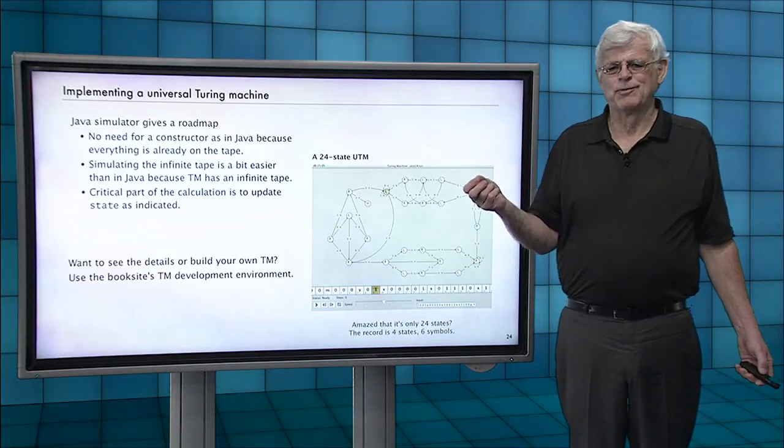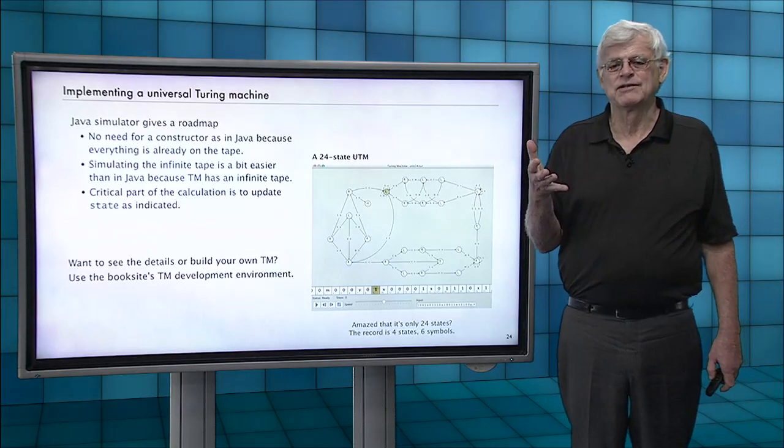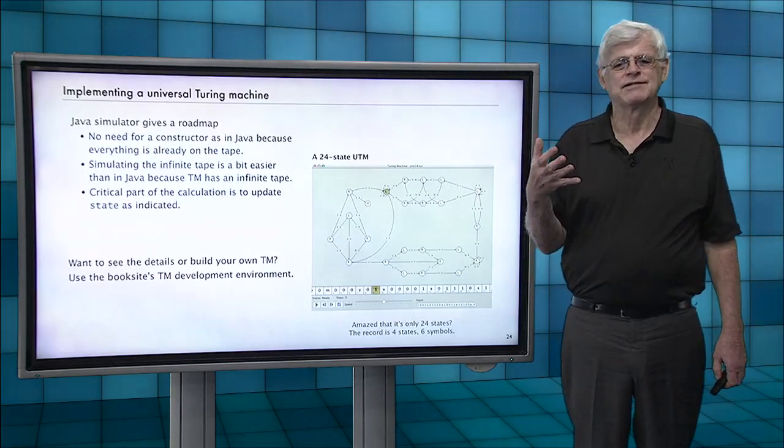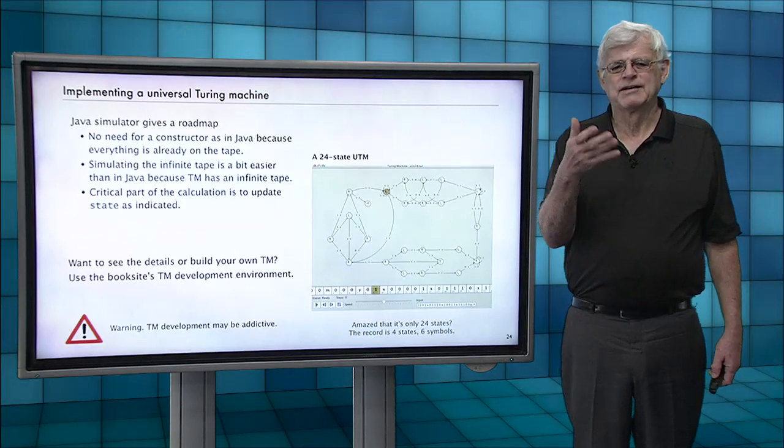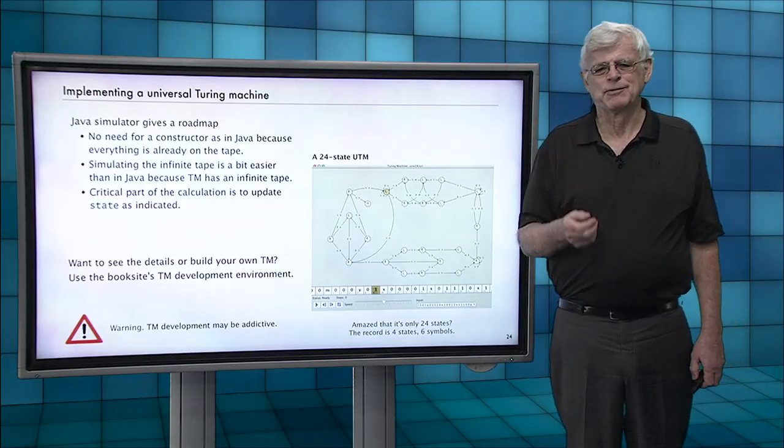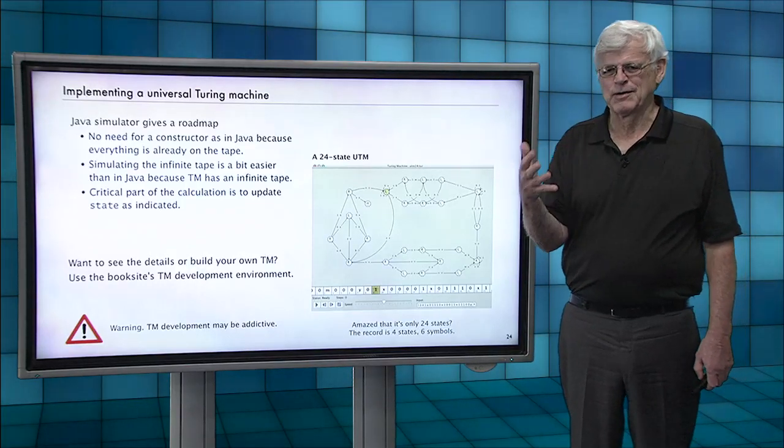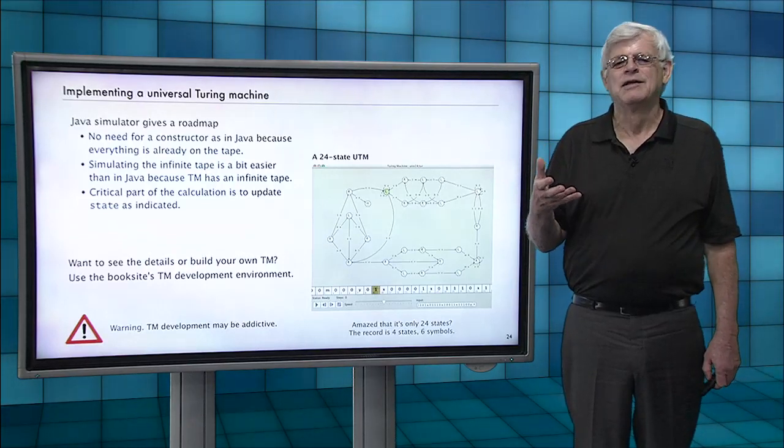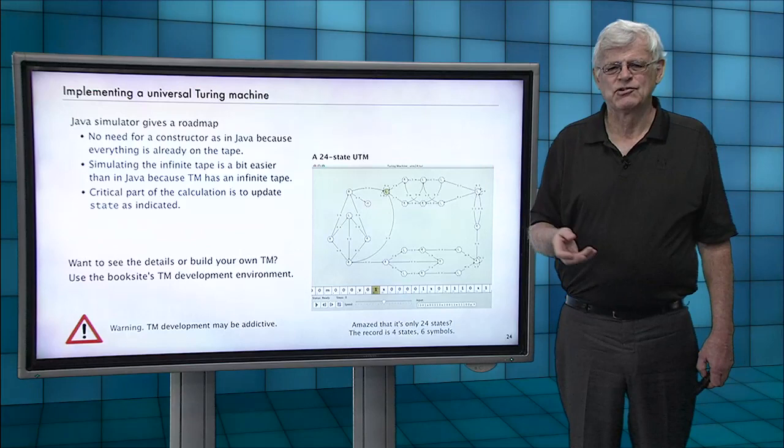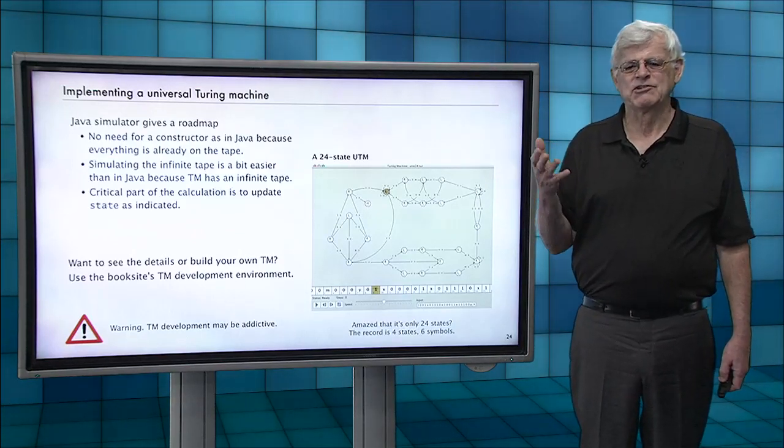If you think that 24 is a small number, actually people have developed universal Turing machines that have only four states with six different symbols. Just a warning, if you get into working with Turing machines and you like working with discrete processes and programming, it can be addictive. And you'll find lots of examples on the book site of Turing machines that people have developed for all sorts of computational tasks.